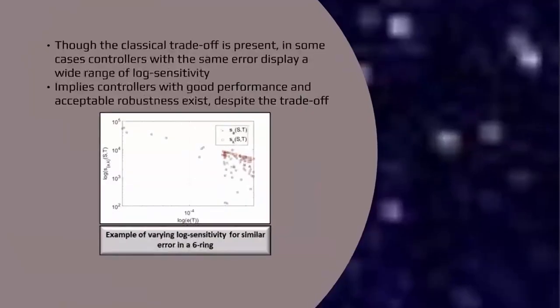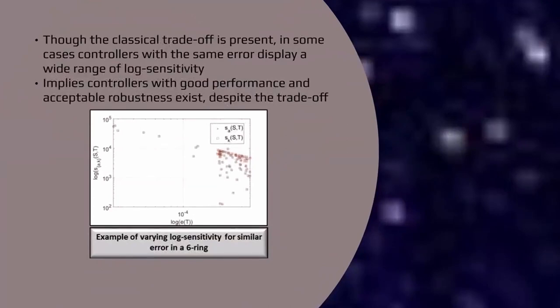The final thing that we note is that, although the overall trend suggests a trade-off between performance and robustness, as seen in this chart, cases do exist where controllers with similar fidelity error show a wide range of log sensitivity. This suggests that, despite the trade-off, controllers with simultaneously acceptable robustness and performance characteristics do exist.